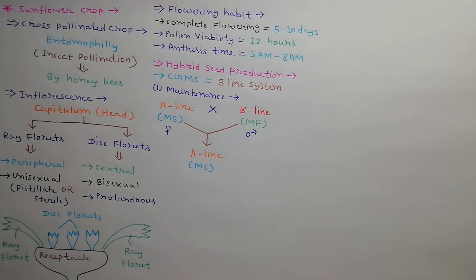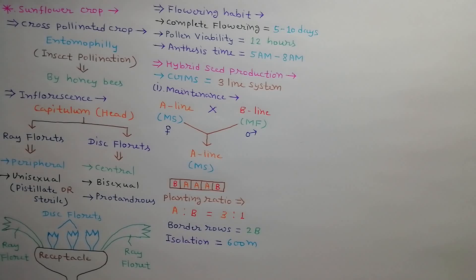As described in lecture number 2, male sterile line A is crossed with male fertile line B for the maintenance of A line. In the maintenance field, the ratio of A and B lines should be 3:1 with 2 border rows of male parents on the sides of seed production plot, and isolation distance should be 600 meters from other fields.